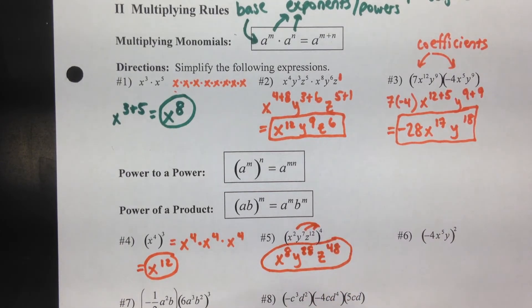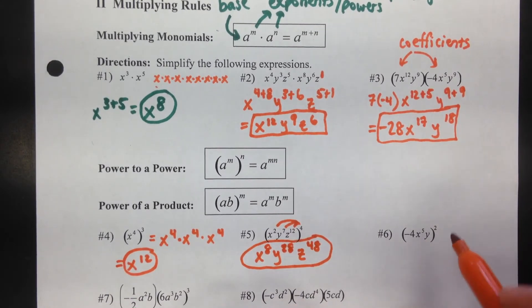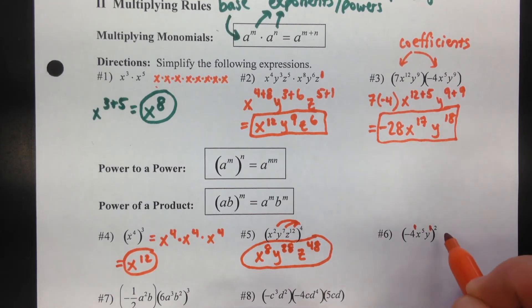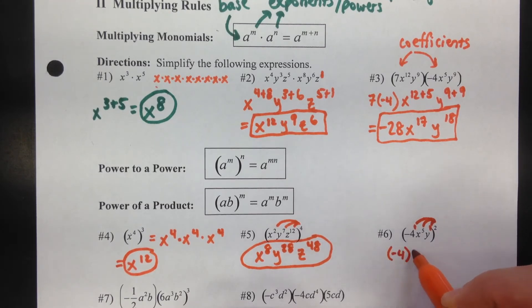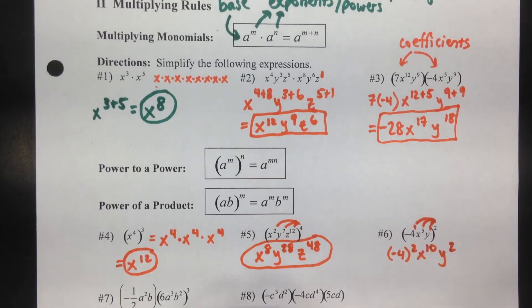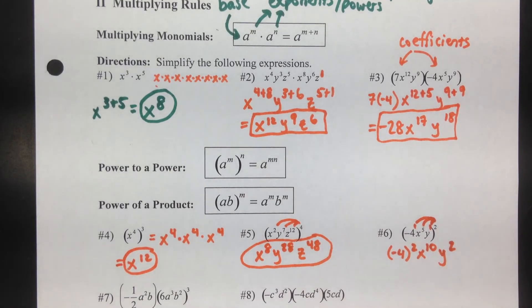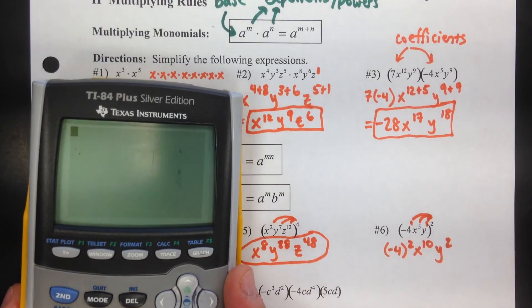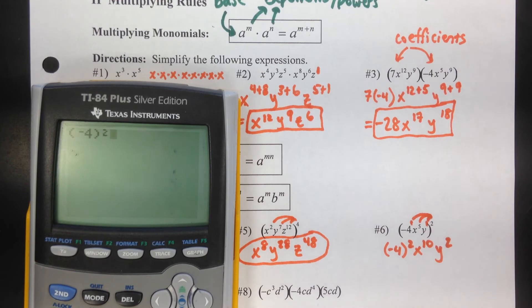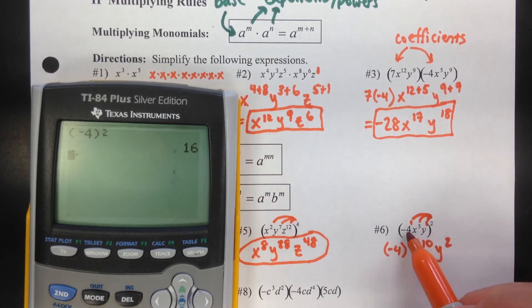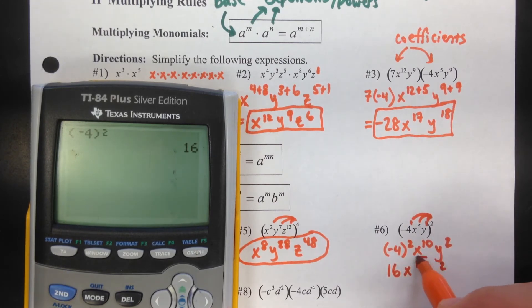For example 6, we have negative 4 to the first, x to the fifth, y to the first inside parentheses raised to the second power. The outside exponent 2 distributes to all the exponents inside: negative 4 to the second, x to the 5 times 2 which is 10, y to the 1 times 2 which is 2. When you square a negative, negative 4 squared is positive 16 — make sure you square the negative too. The answer is 16x to the tenth y squared.